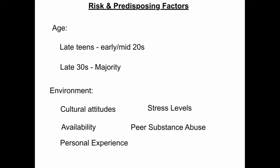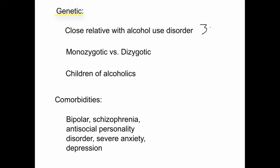Genetic risk factors include the following. The rate of alcohol use and abuse is three to four times higher in close relatives of individuals with alcohol use disorder. There is a higher rate in monozygotic twins than dizygotic twins, and a three to four times risk in children of alcoholics even when given up for adoption.